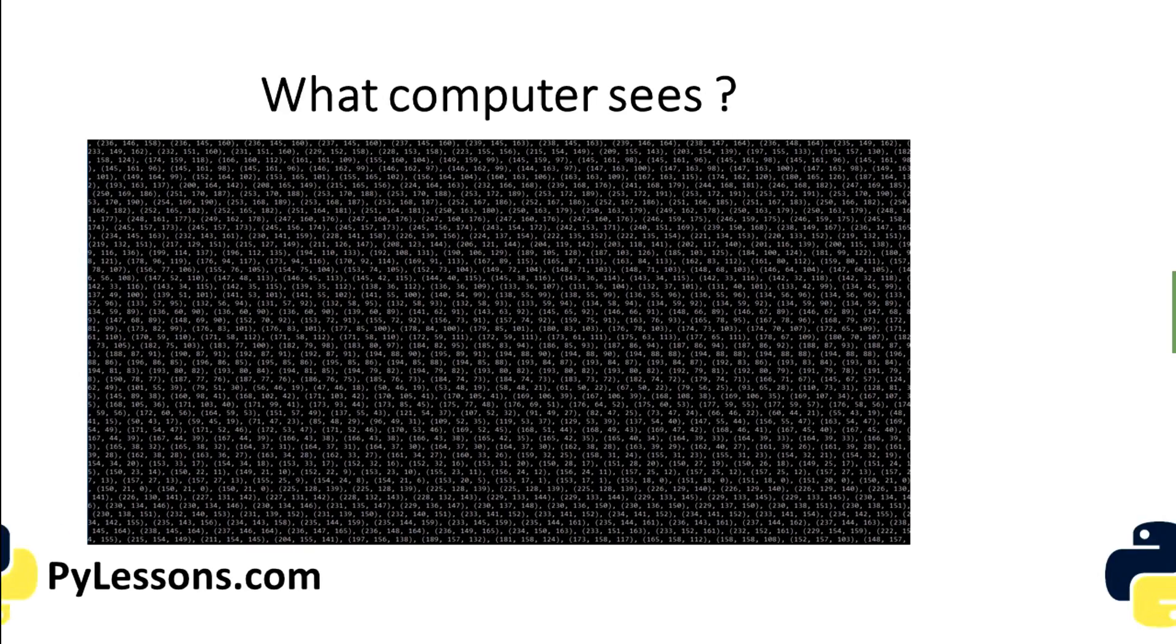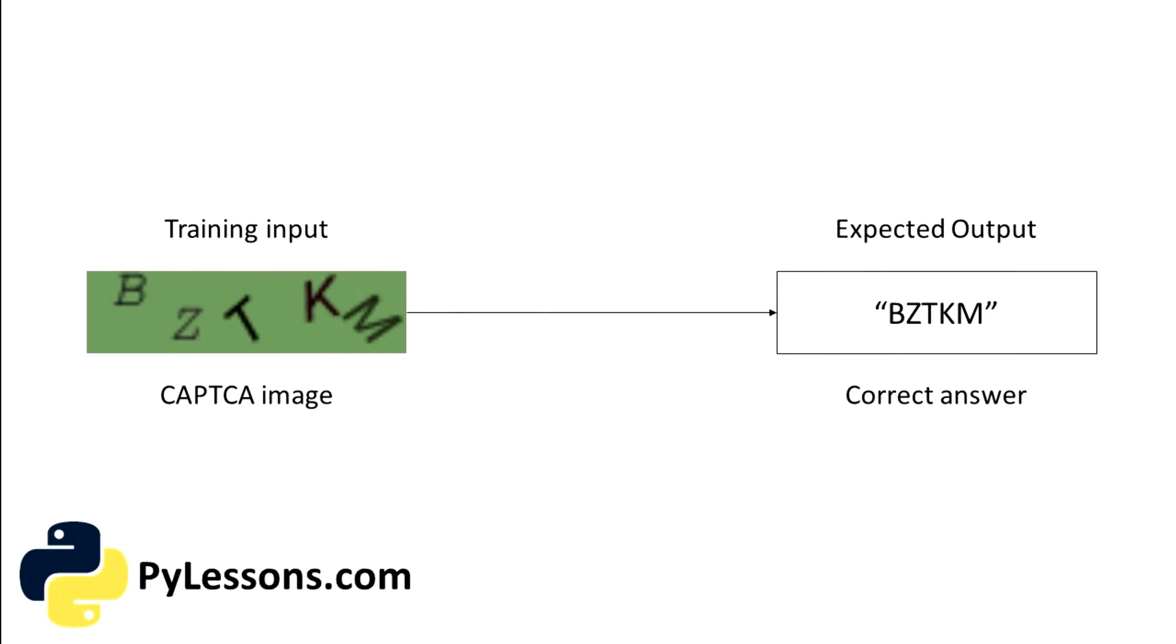At the end, our method will be able to solve CAPTCHAs with different amounts of symbols. So to use any machine learning system, we need to collect training data to break a CAPTCHA system. We want a training model that works like this: we give them a CAPTCHA, for example with five symbols, and as an answer we receive a correct answer.